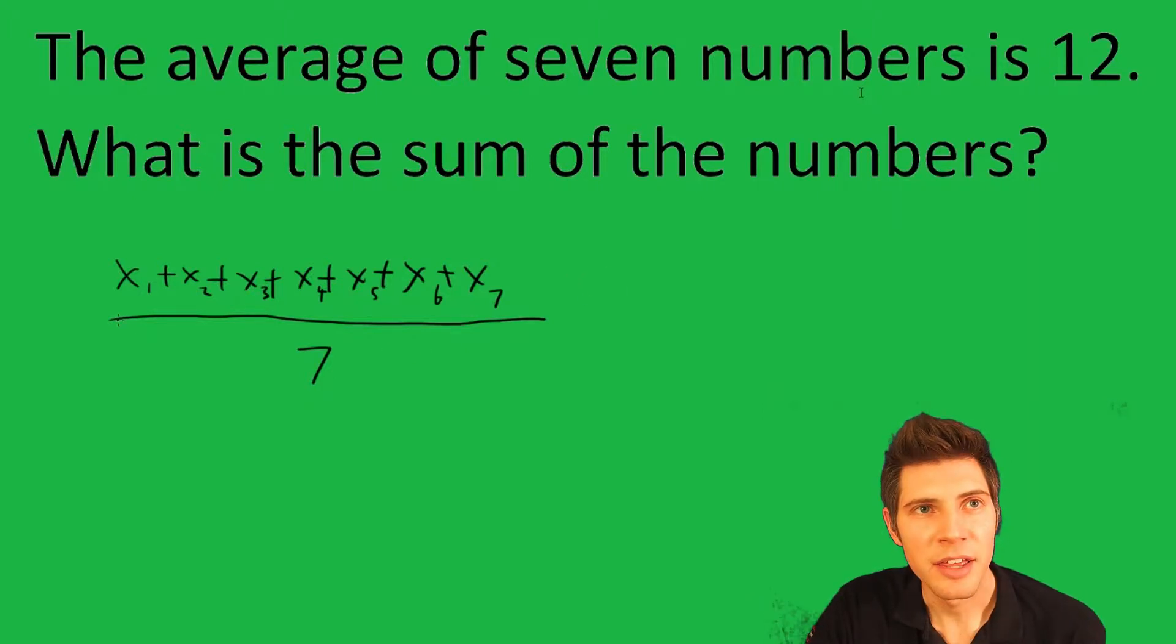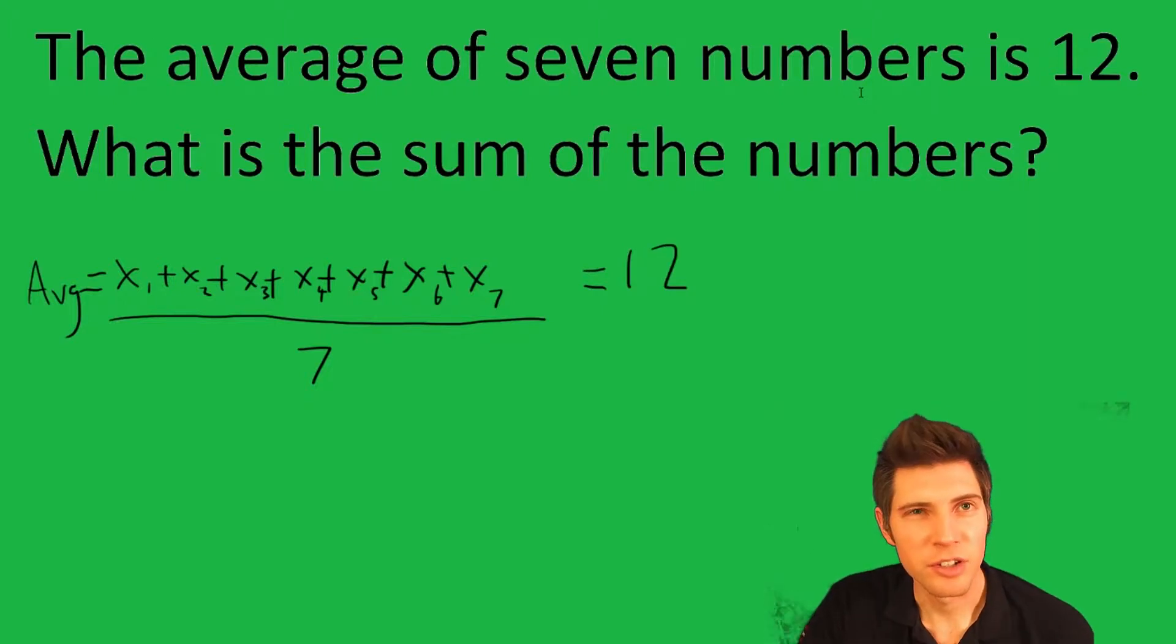And that is the average. We're told that the average here is equal to 12, so that's our first step. The average of seven numbers is 12. Now we want to know what is the sum of the numbers.